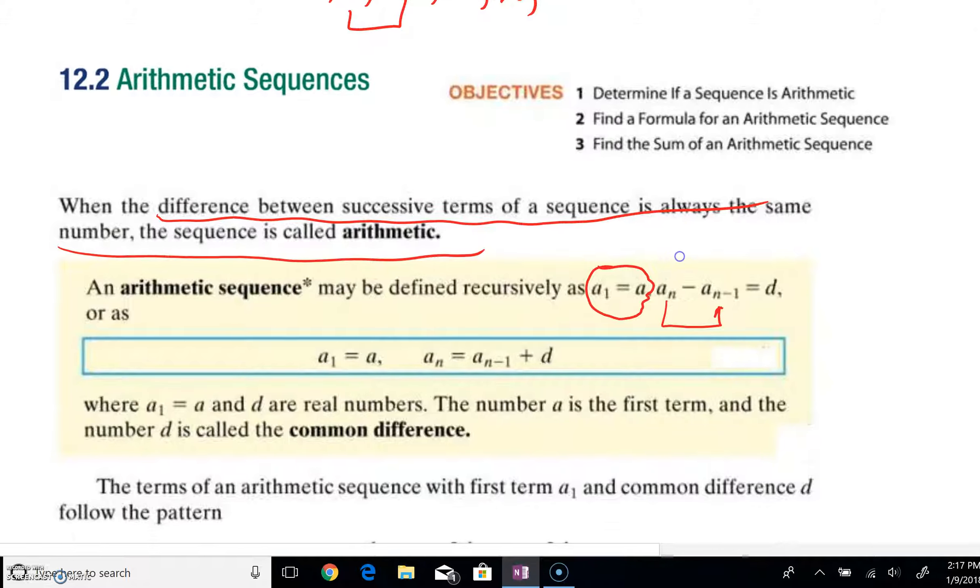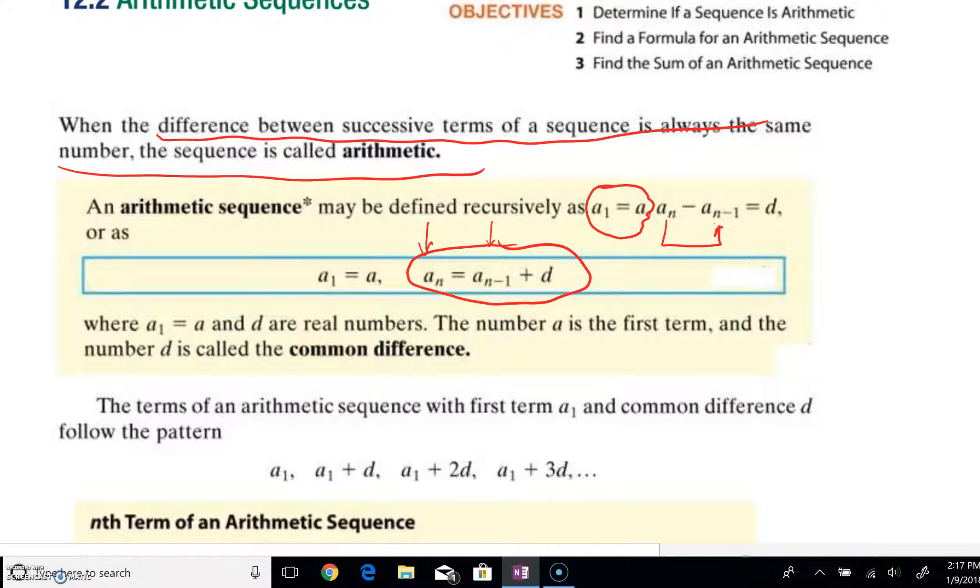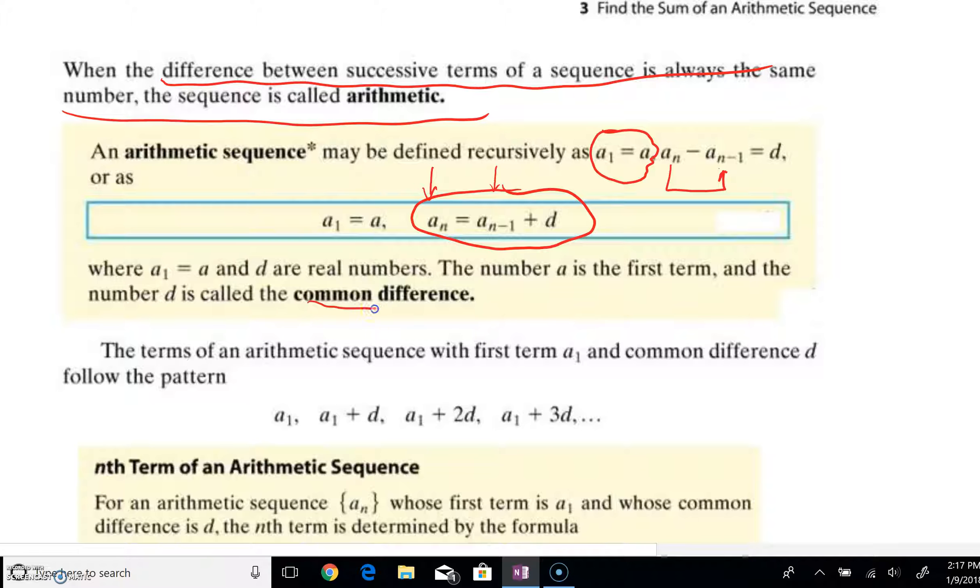Now, as you can see right here, we could add the a sub n minus 1 to both sides. Another way we can look at this is to say that to get your nth term, go to your previous term and add that common difference. So this is a recursive way that we could represent this pattern. Again, a sub 1 is our first term. d is going to be known as the common difference.